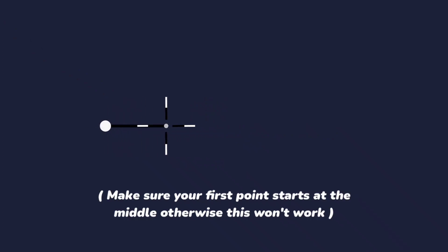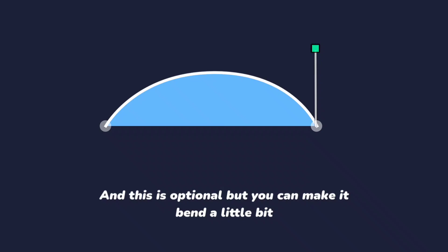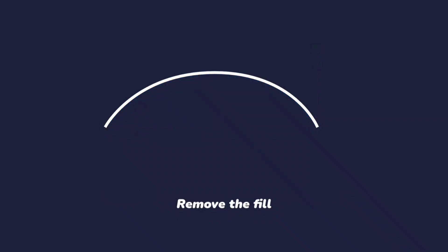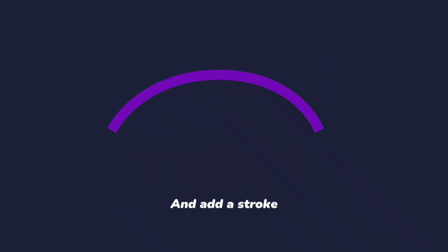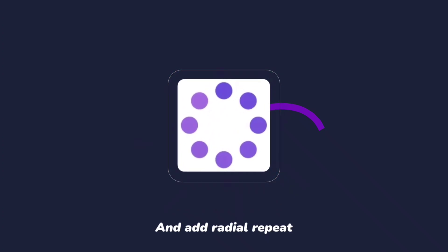First draw a line, and this is optional but you can make it bend a little bit. Remove the fill and add a stroke, and add radial repeat.